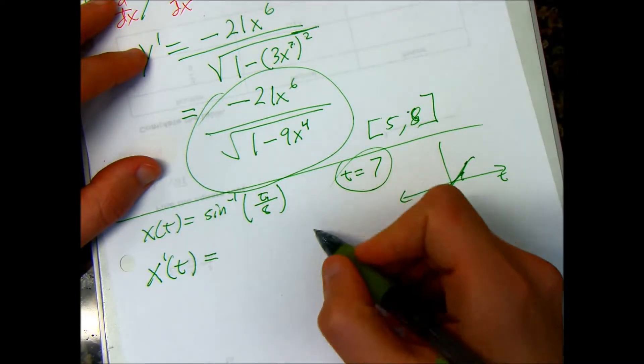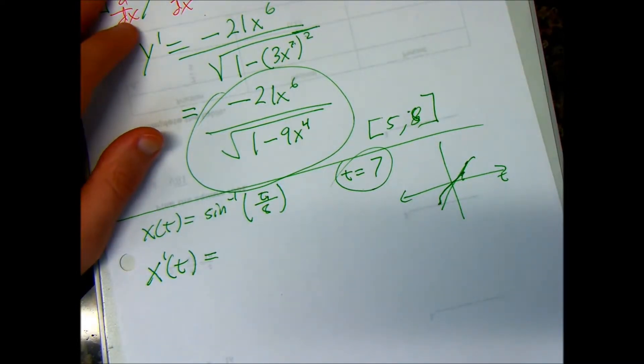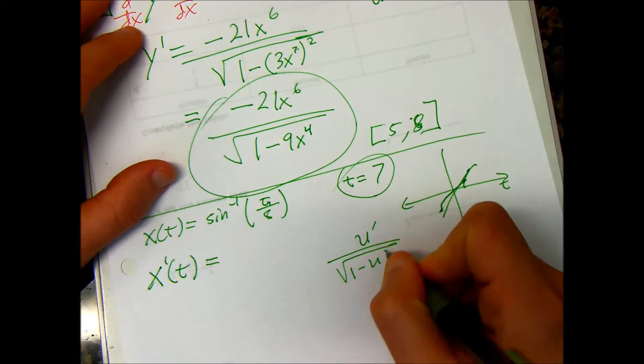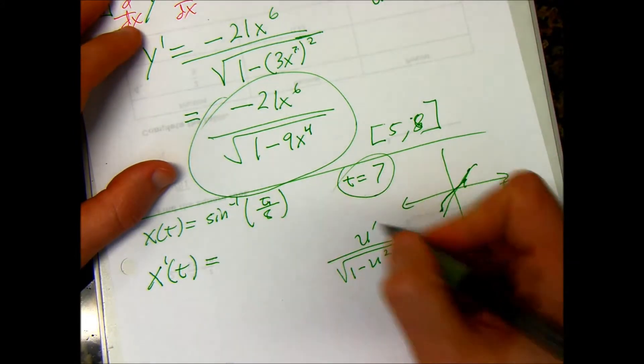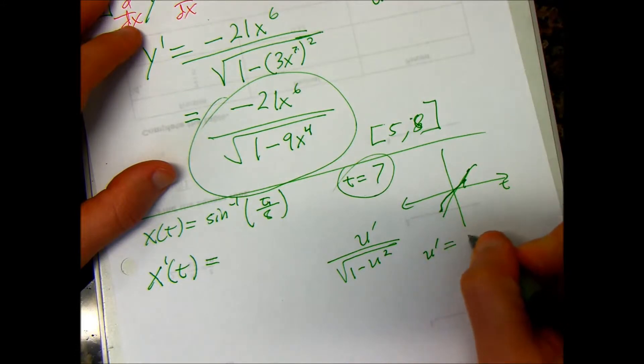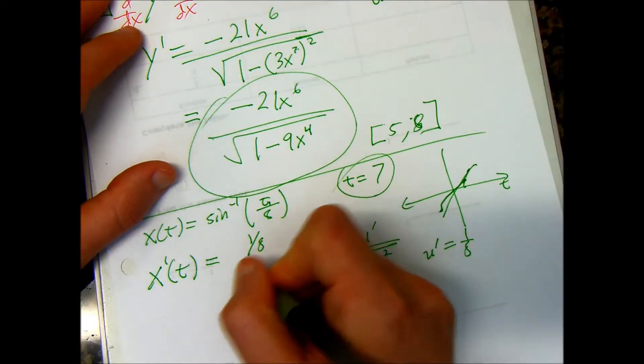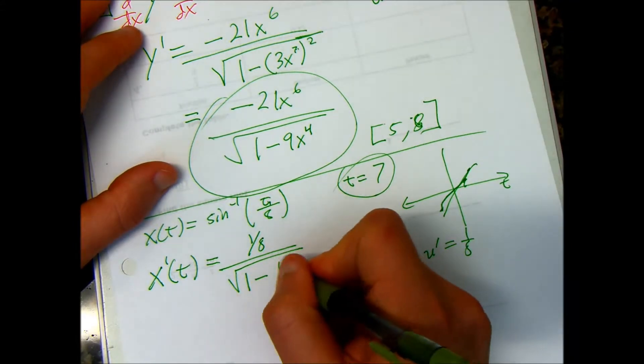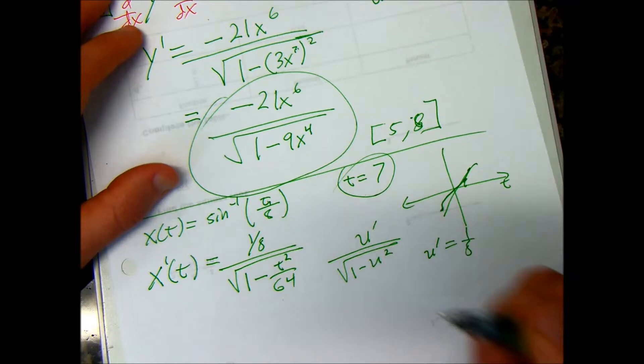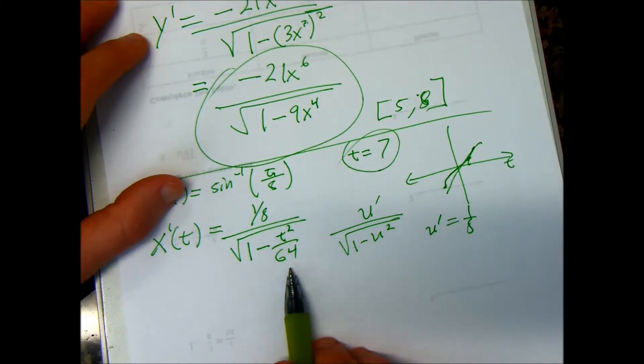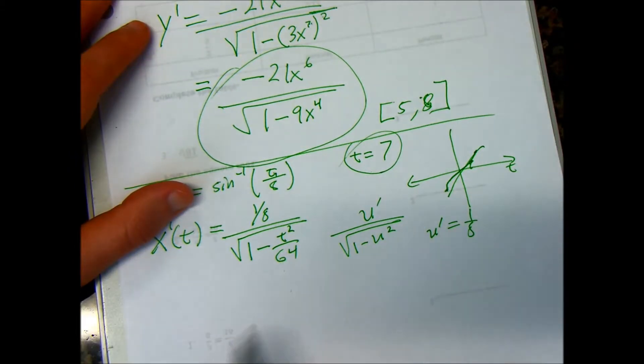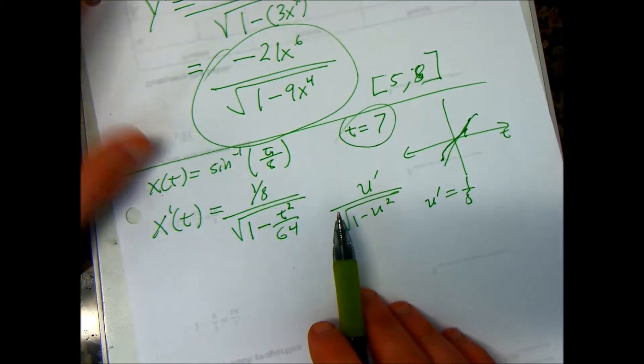So, the first thing you do is just take the derivative. The velocity is the derivative of the position function. So, we have to use our formula. Arc sine is u prime over the square root of 1 minus u squared. My u is t over 8, so u prime is equal to 1 over 8. So, I have 1 over 8 over the square root of 1 minus u squared. It's going to give me t squared over 64. You can work out the details if I'm skipping steps here, but just t squared is t squared, and 8 squared is 64. So we found the derivative.